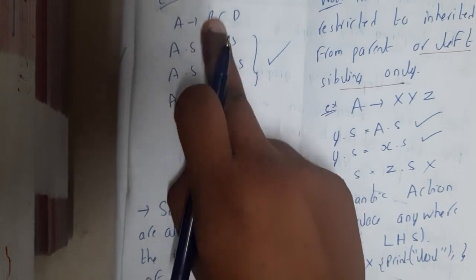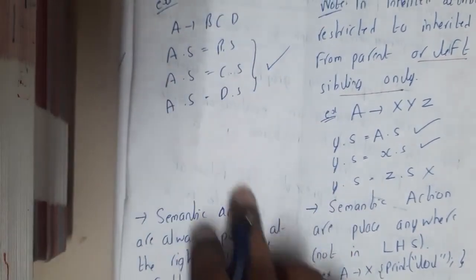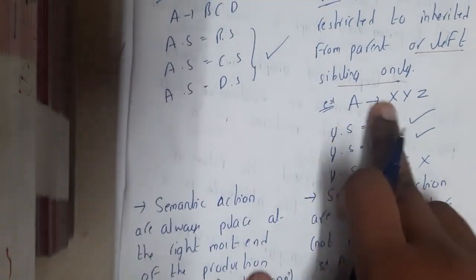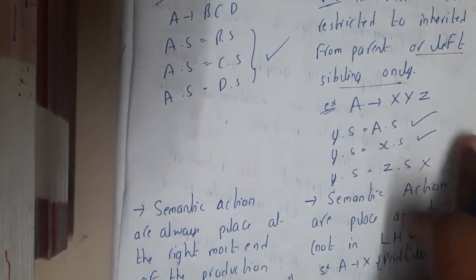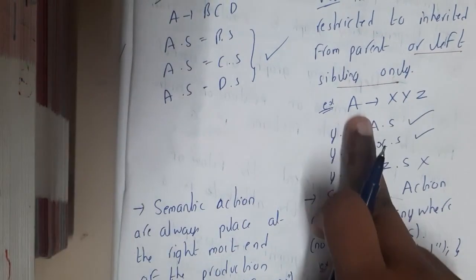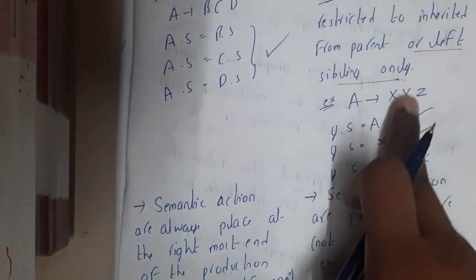here A's value can depend on B, C, D, or any kind of combination. Whereas if A implies XYZ, if you are calculating for Y, it can depend on A, it can depend on X, it can depend on A and X combinations,